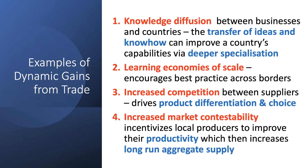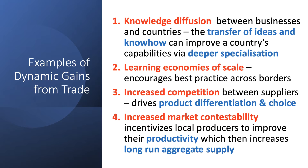Crucially, another aspect of this increased contestability is that trade incentivizes local producers to improve their productivity, which then increases long-run aggregate supply. So these are some of the dynamic gains from trade — in terms of transfer of ideas and know-how, consumer choice, and hopefully more research, productivity, and innovation.